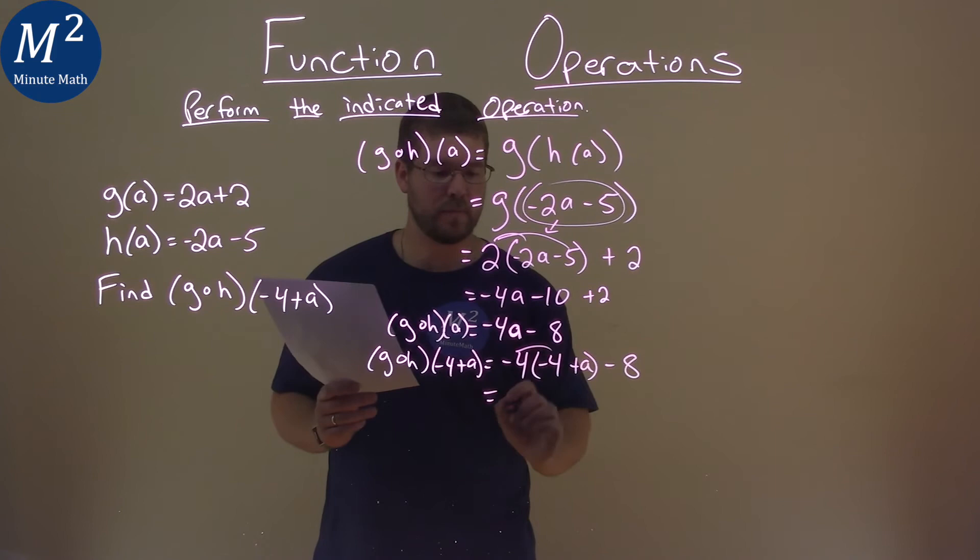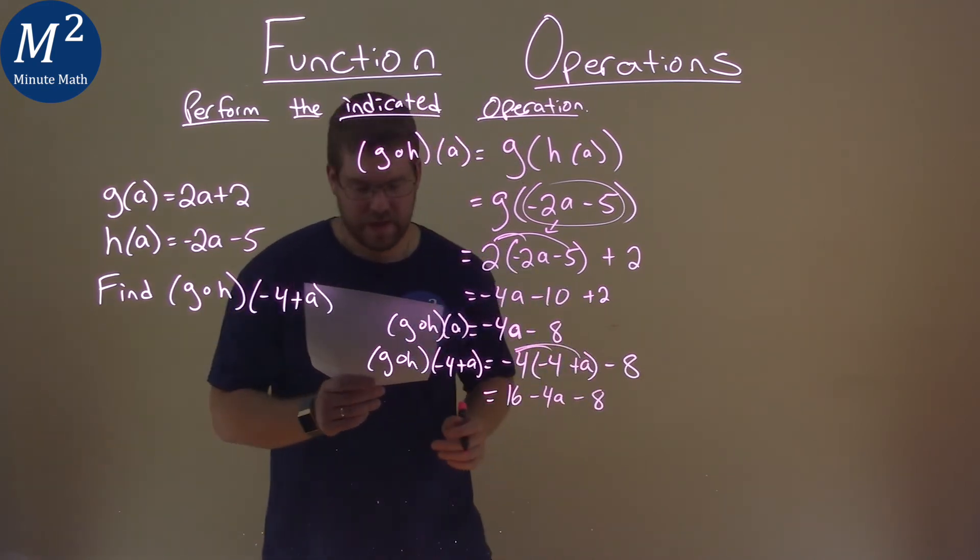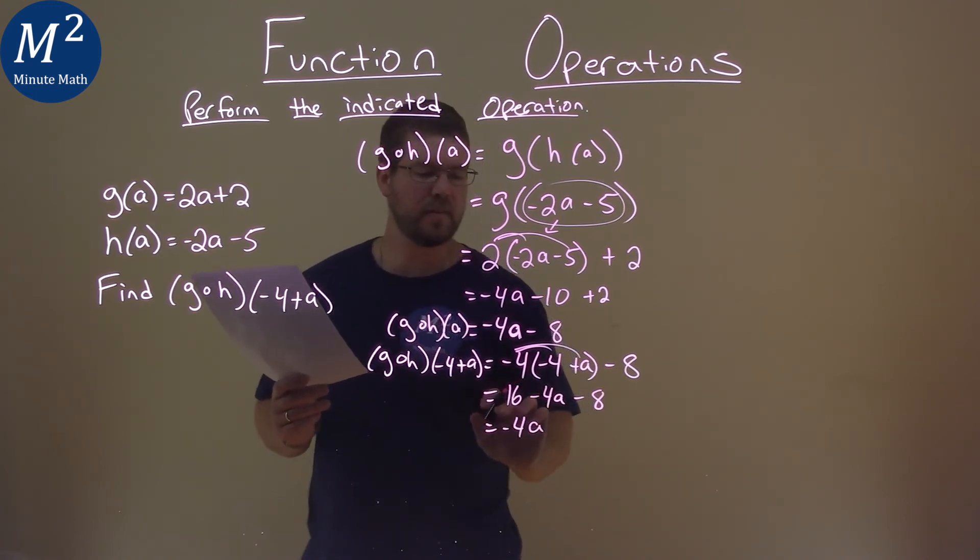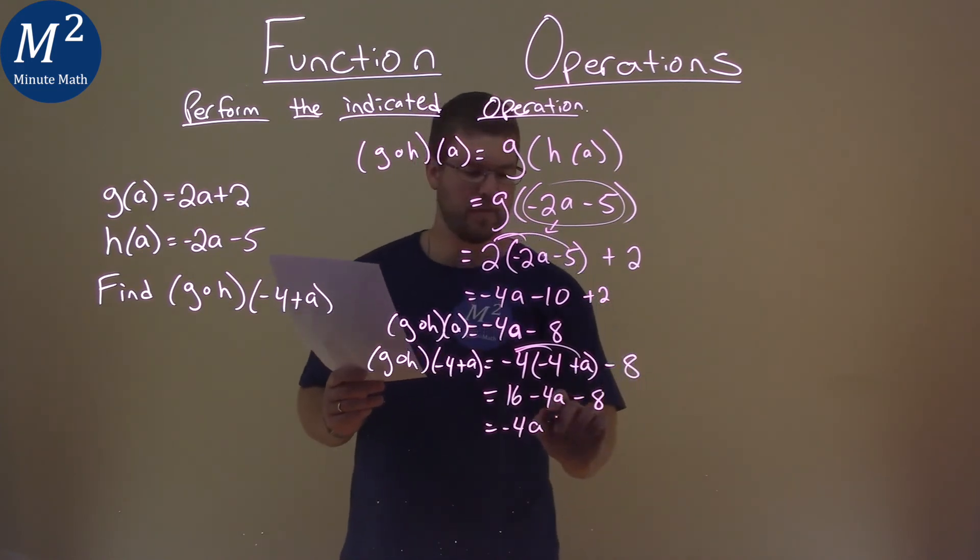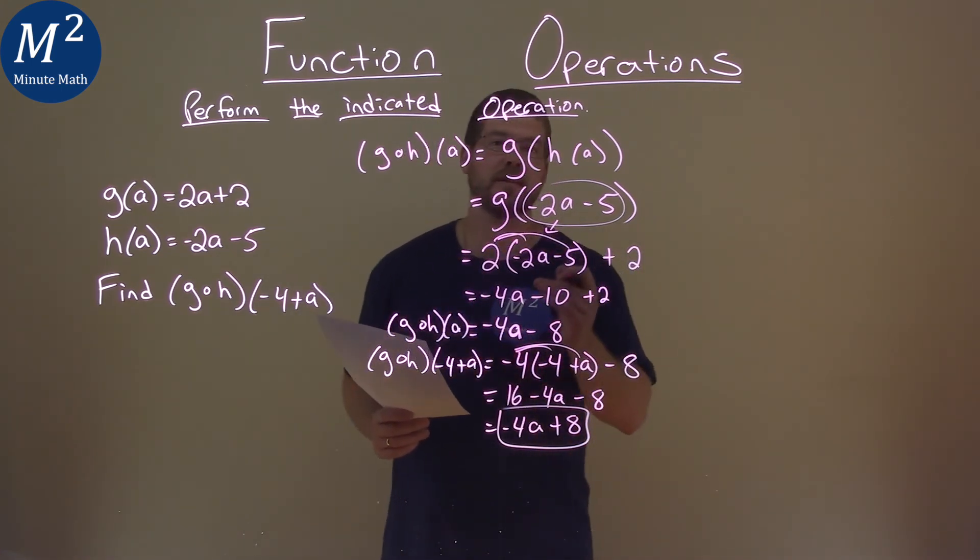Now, let's simplify. Negative 4 times negative 4, positive 16. Negative 4 times a is a negative 4a. We minus an 8. Let's rearrange this and combine our like terms. Nothing goes with the a, so we put that first negative 4a here, and 16 minus an 8 is a positive 8. And so our final answer here is negative 4a plus 8.